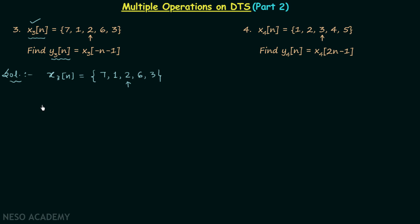There are two options: either perform time reversal first and then time shifting, or perform time shifting first and then time reversal. In case 1, we will perform time shifting first. So we take signal x3n and after performing the time shifting operation we get a new signal x3(n-1).